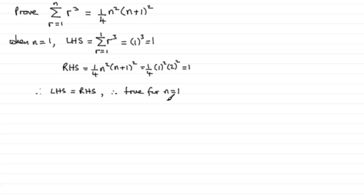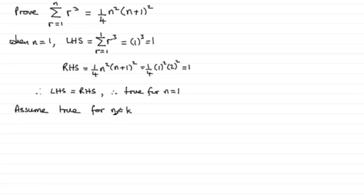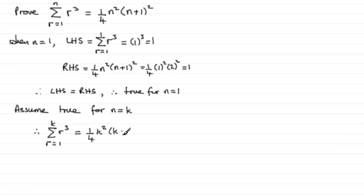Now we've proved it's true for n equals 1. We assume it's true for a particular integer value of n — we normally call that k. So we say: assume true for n equals k, and we've got to show that it's true for n equals k plus 1 based on this assumption. If it's true for n equals k, then the sum of r cubed from r equals 1 to k is equal to a quarter of k squared multiplied by k plus 1, all squared.